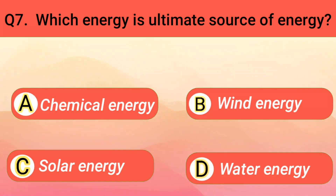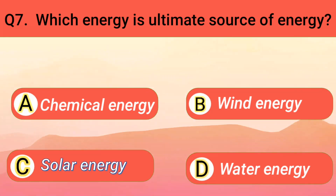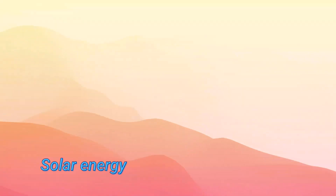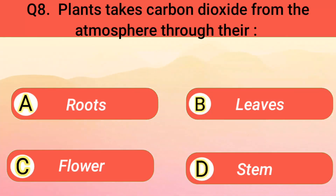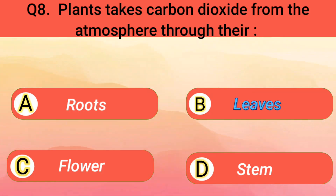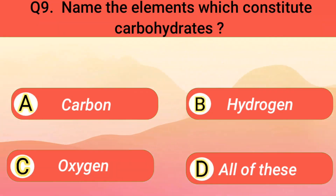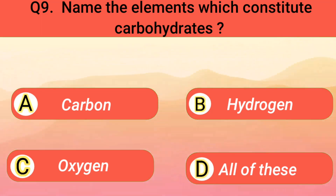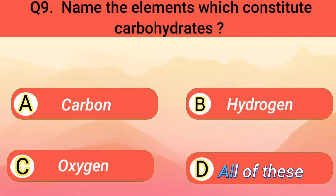Which is the ultimate source of energy? Solar energy. Plants take carbon dioxide from the atmosphere through their leaves. Name the elements which constitute carbohydrates. All of these.